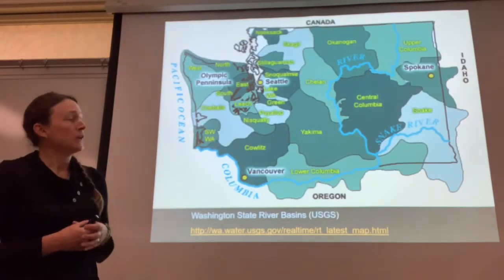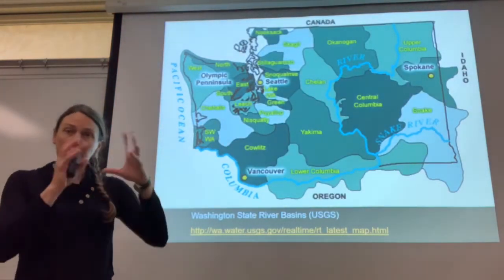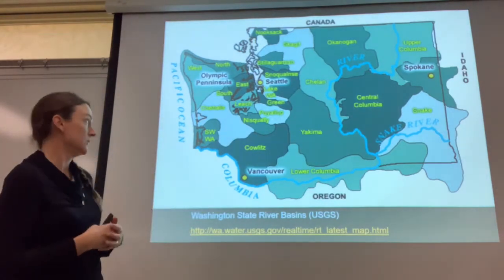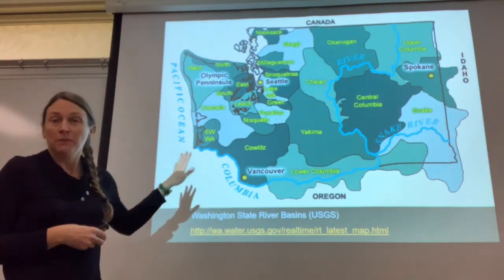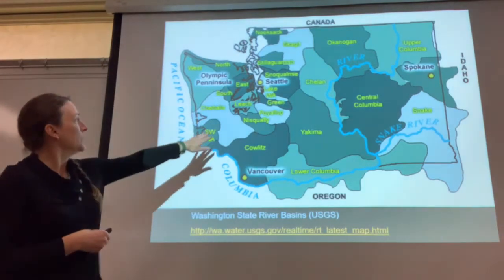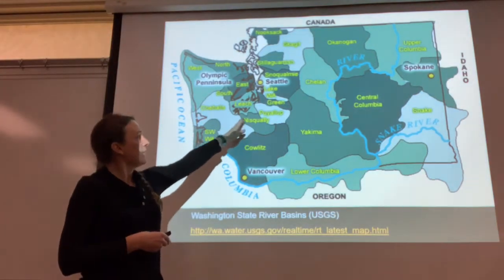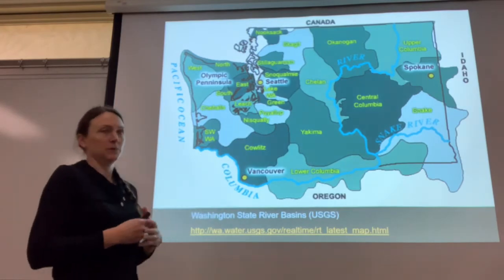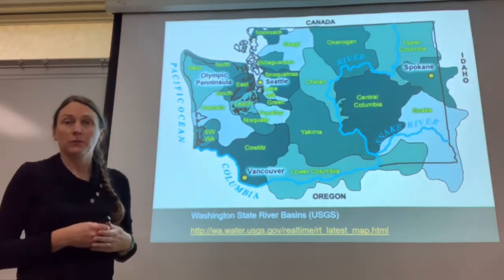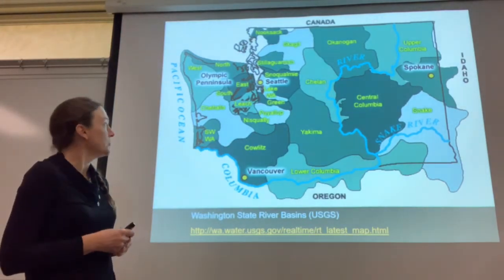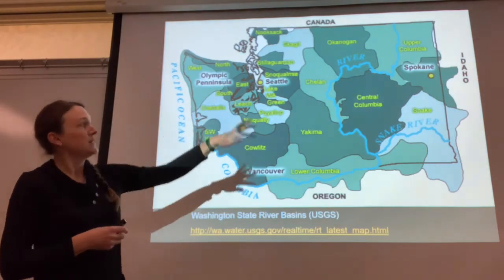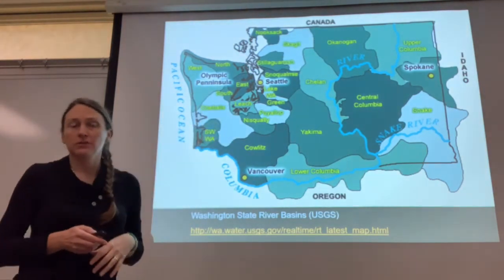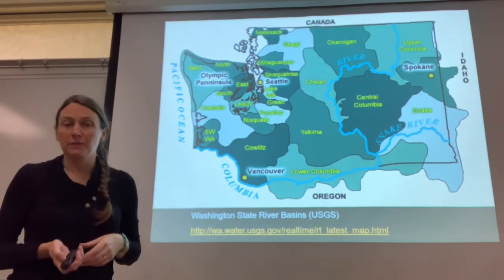You can also think about rivers in terms of their basins — what area of land do they drain? This is a map showing the major basins in Washington. We live kind of in the Chehalis-Nisqually Basin in Olympia. Depending on where you are, you might be in one part of the watershed or a different watershed. You can see some of these basins are really large, and then you have smaller basins around the Puget Sound, so basin size varies quite a bit.